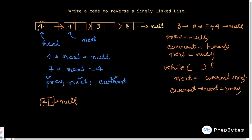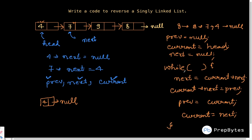After reversing current's next, we update prev to current, then update current to next. We keep doing this until current equals null — that's our loop condition: while current is not equal to null. When current becomes null, we have already reversed the complete list and we exit the loop.